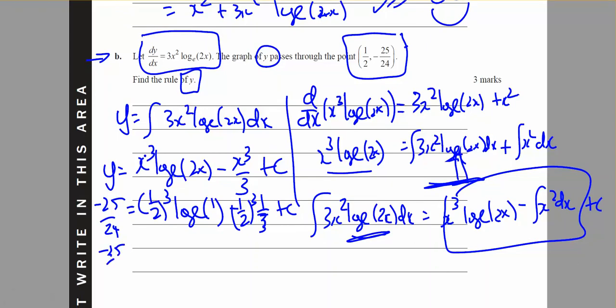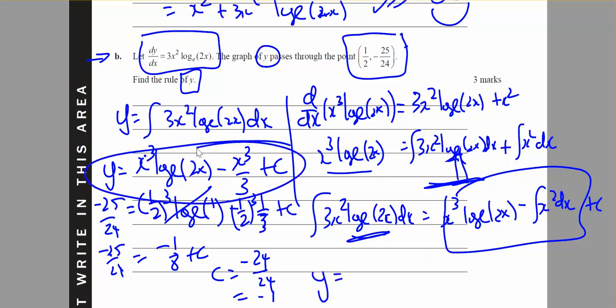Negative 25 over 24 equals log base e of 1 is 0, so it's going to be negative 1 eighth plus c, c equals negative 24 over 24, or c equals negative 1. Therefore y equals x cubed log base e of 2x minus x cubed over 3 minus 1.